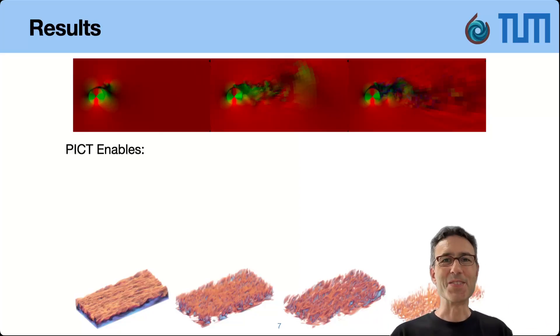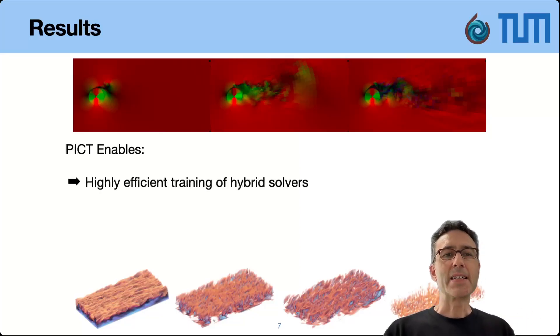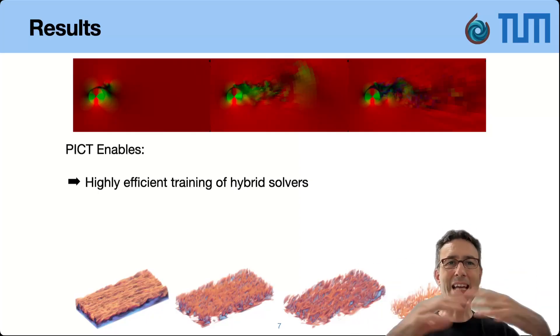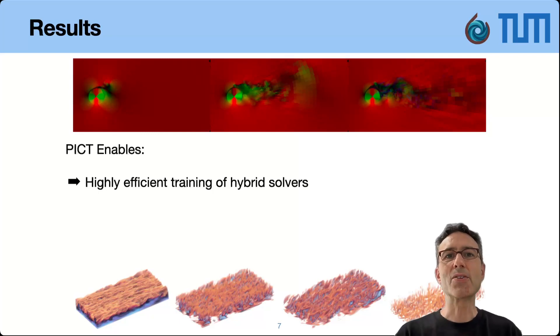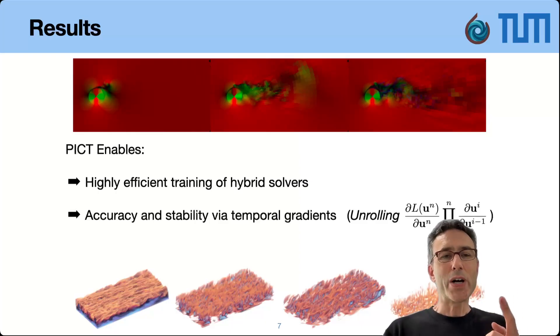You can use a graph net on top or your favorite neural operator representation. It would be great to have other people trying it out. PICT is basically enabling you to train these hybrid solvers that have a neural network interacting or any neural operator, any architecture with your solver. It's worth mentioning here it's basically agnostic to the architecture. You can plug anything in here, you can use a graph net on top or your favorite neural operator representation.